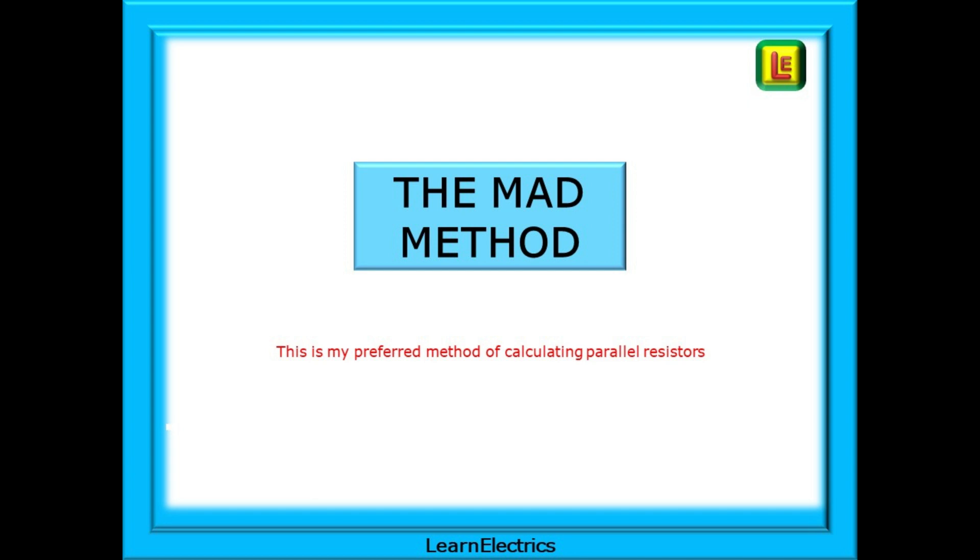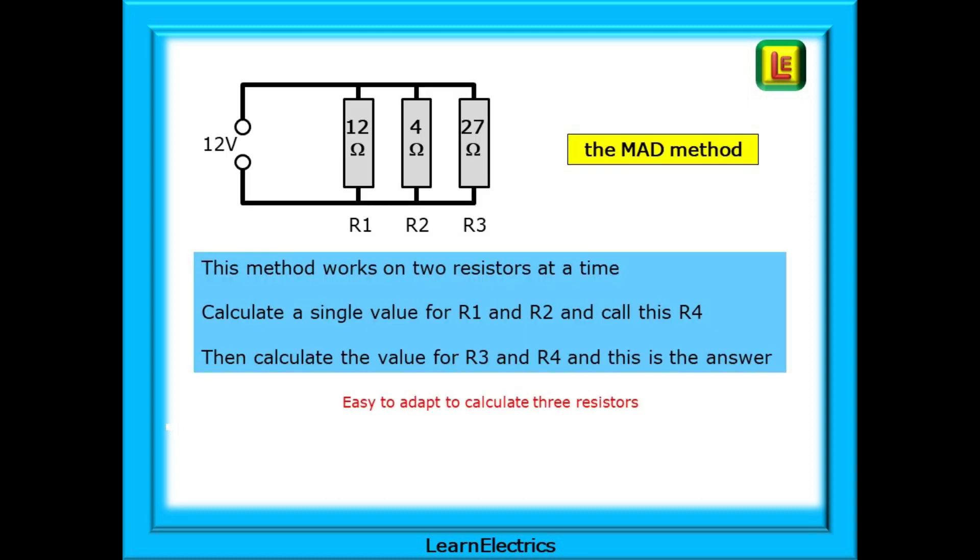Now the MAD method, and this is my preferred method of calculating parallel resistors. This method works on two resistors at a time. Calculate a single value for R1 and R2, and call this R4. Then calculate the value for R3 and R4, and this is the answer. It is so easy to adapt to calculate three resistors or more.